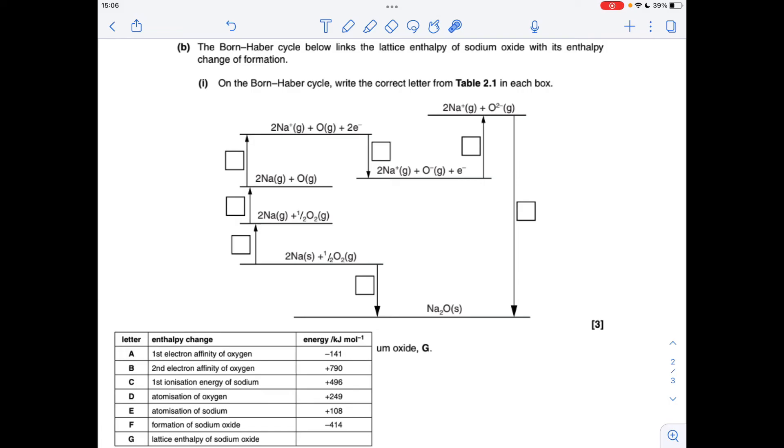First part of B, we've got to label up the Born-Haber cycle as per these labels here. I've just copied the table up to see me going backwards and forwards. So starting with this one here, we're going from elements to the compound, so that's enthalpy change of formation, so that's letter F.